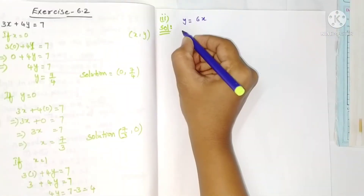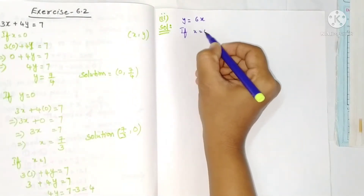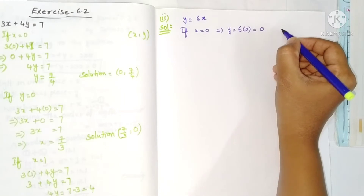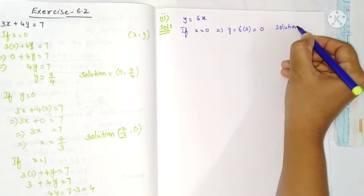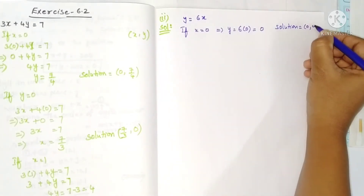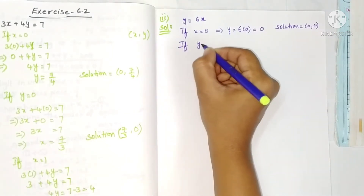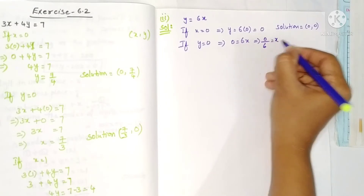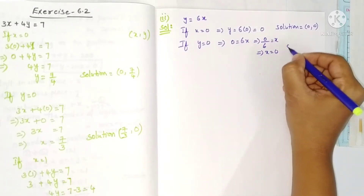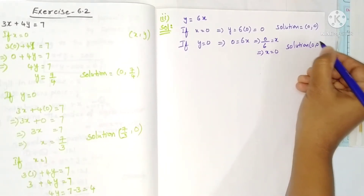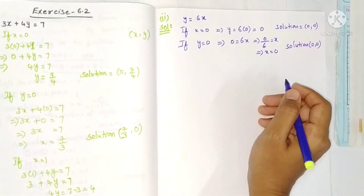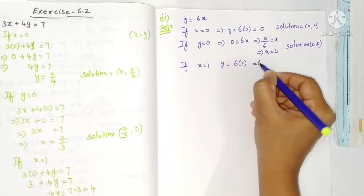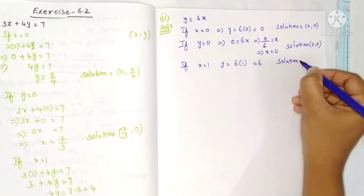Second equation: y = 6x. If x = 0, then y = 6 into 0 = 0, so the solution is (0, 0). If y = 0, then 0 = 6x, so x = 0 by 6 = 0, giving solution (0, 0) again - that's repeated. So take x = 1: y = 6 into 1 = 6, solution is (1, 6).